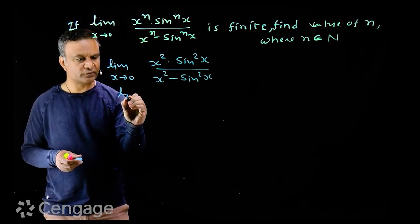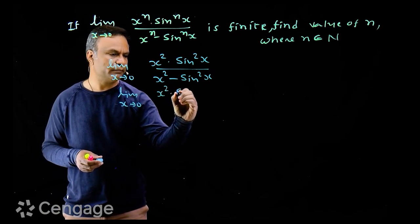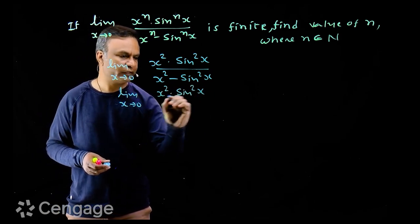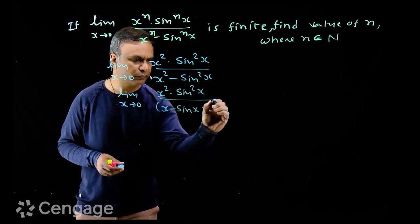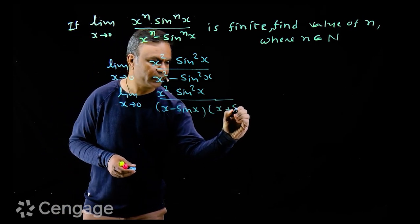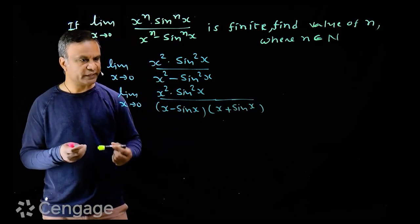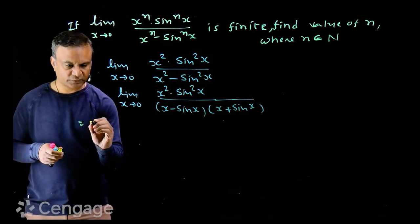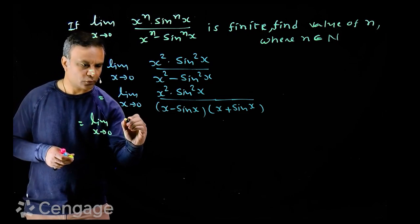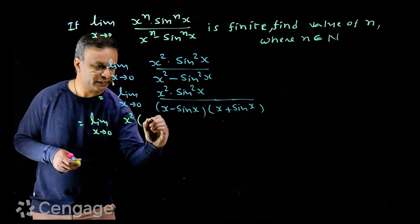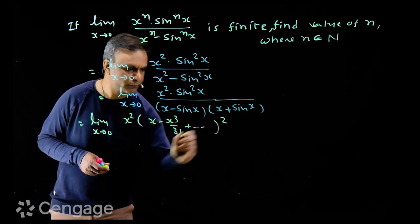For n = 2, we have the limit as x tends to zero of x²·sin²(x) over x² minus sin²(x). We can factorize the denominator as (x minus sin x) multiplied by (x plus sin x). Now we use the expansion of sin(x).